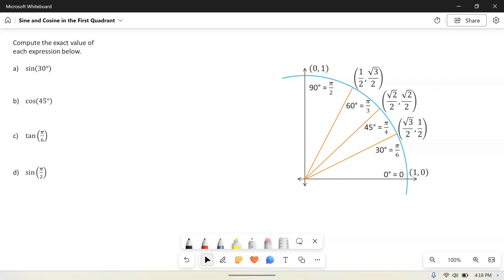So we want to compute sine of 30 degrees first, and remember when we're talking about sine, we want to look at the y-coordinate. So for sine of 30 degrees, we want to find our 30-degree angle, and we want to look at the y-coordinate.